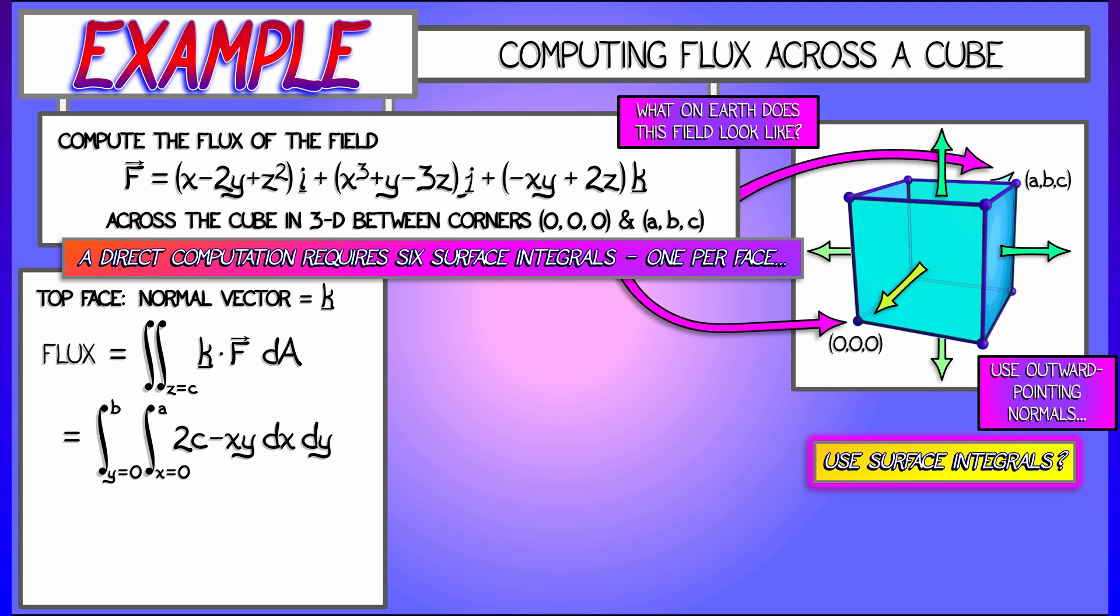As x goes from 0 to A, y goes from 0 to B, that integral is not going to be so hard. What I'm going to wind up getting is 2cxy - x²y²/4. When I evaluate that from 0 to A and 0 to B, I get 2abc - a²b²/4.